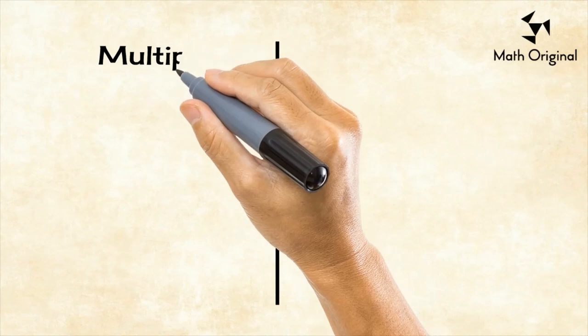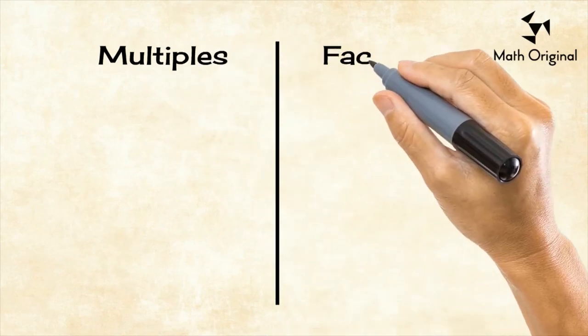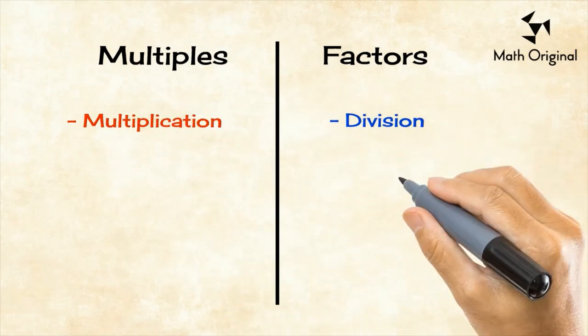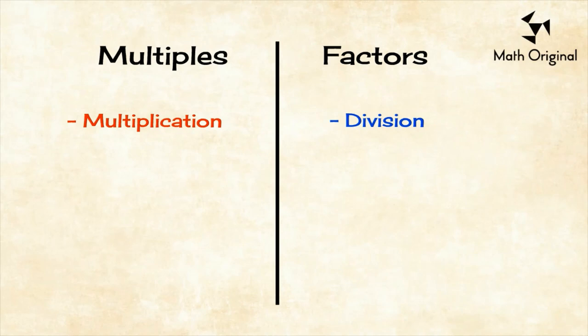Lastly, let's compare some facts between multiples and factors. The basic operation of finding multiples is multiplication. On the other side, for finding factors we use division.